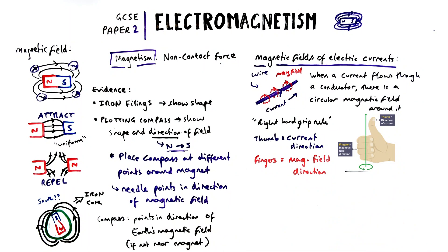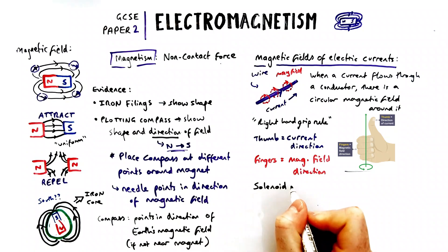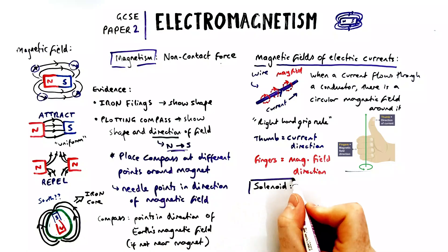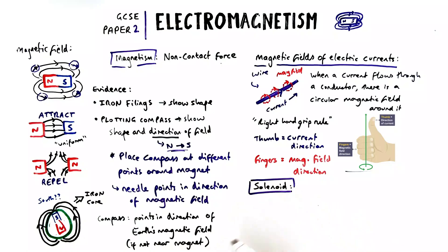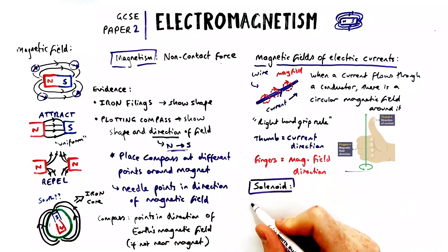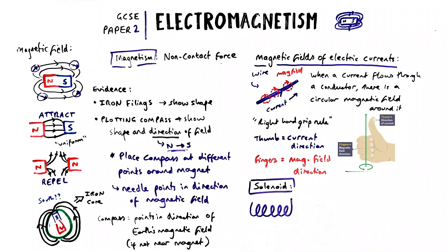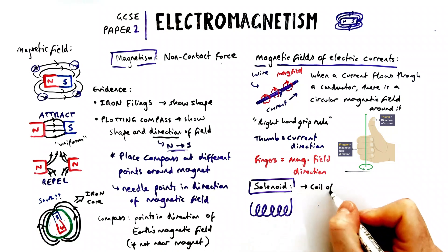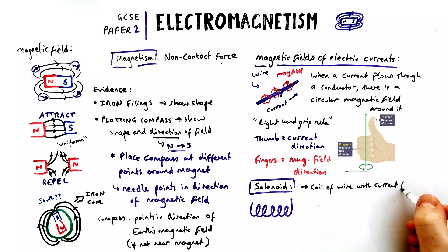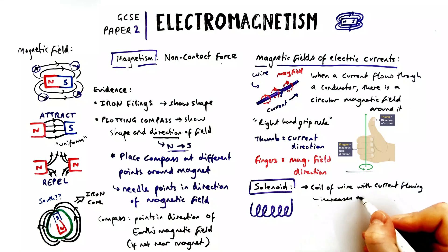So in this case the current is pointing sort of up and the magnetic field is coming around in the direction indicated by the arrows on the diagram. If I wanted to make the magnetic field around a wire stronger, I could coil it into what's called a solenoid — a coil of wire with current flowing through it — which increases the magnetic field strength compared to just the straight wire.